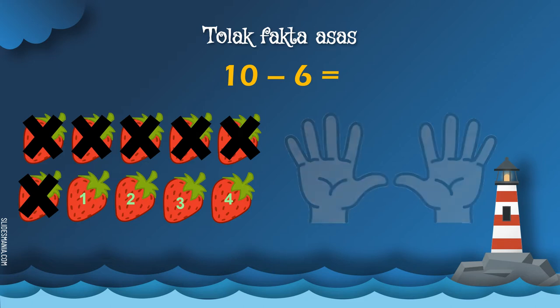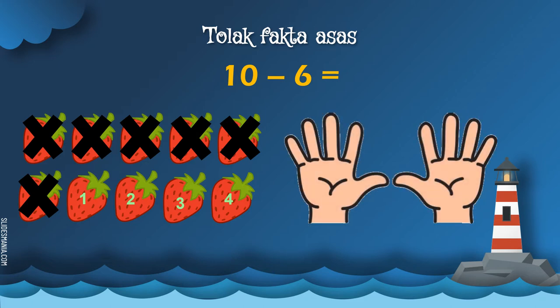Sekarang kita cuba pula guna jari. Keluarkan 10 jari. Kita tutupkan 6 jari — 1, 2, 3, 4, 5, 6. Sekarang kita kira jari yang tinggal: 1, 2, 3, 4. Jadi, 10 tolak 6 sama dengan 4.